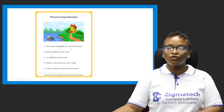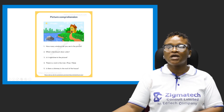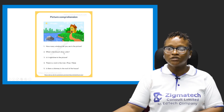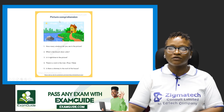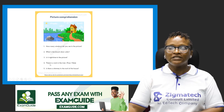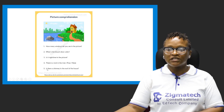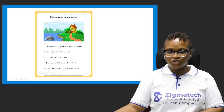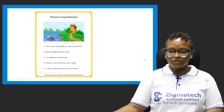What is the house door color? The house door color is brown. Is it nighttime in the picture? By virtue of the moon being out, we could say it is nighttime. Is there a rock in the river? True — that's a river and this is a rock. Is there a chimney in the roof of the house? Yes, there is a chimney in the roof of the house. So we've been able to answer the questions appropriately.